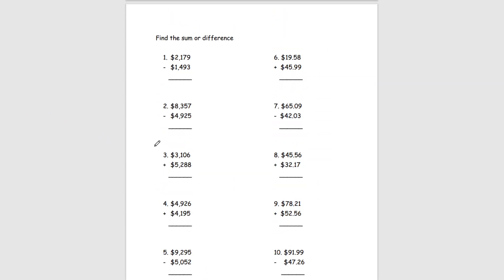Moving on to the next page, we are going to be finding the sum or the difference — we are just going to be subtracting and adding dollars. For number 1, we have $2,179 minus $1,493. So 9 minus 3 gets us 6. 7 minus 9 is impossible so we have to borrow. 1 minus 4 is impossible too, so we borrow 1 from the 2. The 2 becomes a 1, the 1 becomes a 10, and this 7 becomes a 17. So 17 minus 9 is 8, 10 minus 4 is 6, and 1 minus 1 is 0. Our answer is $686.